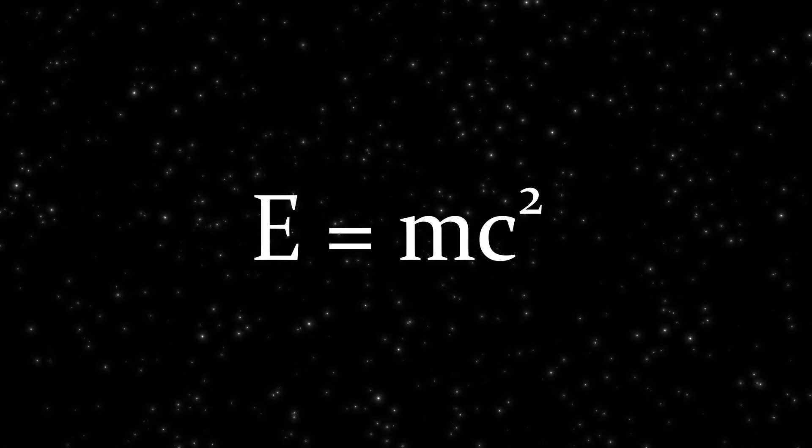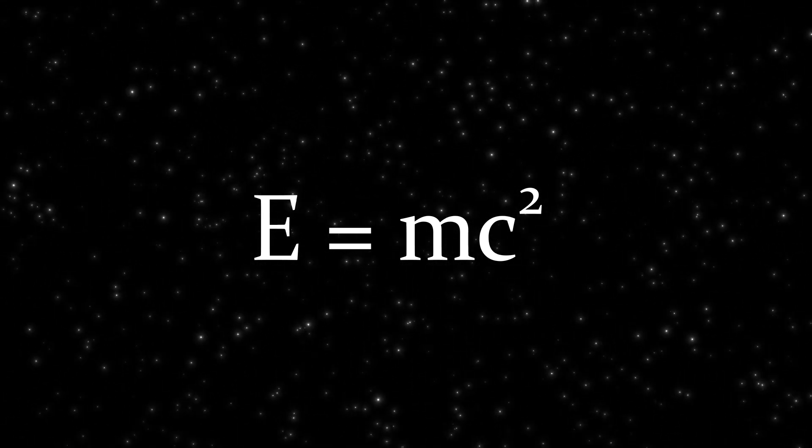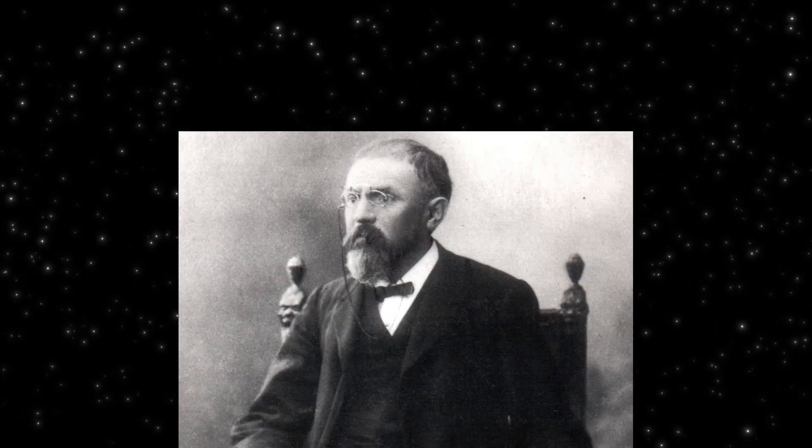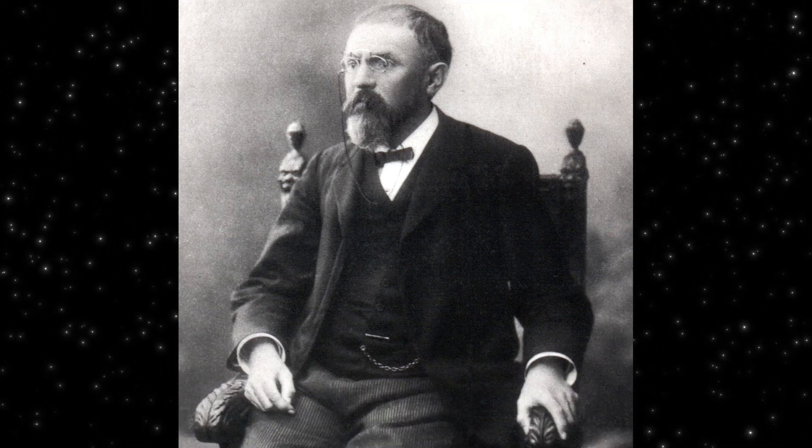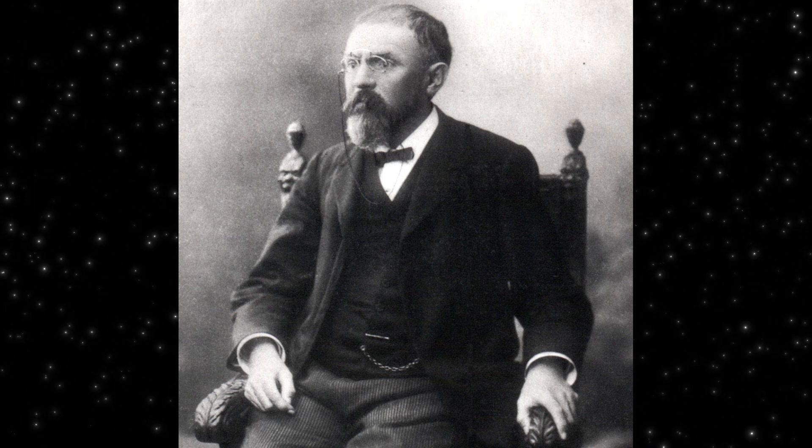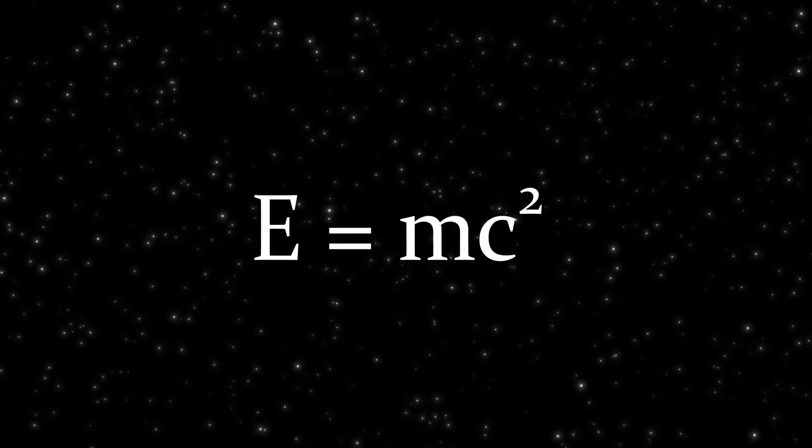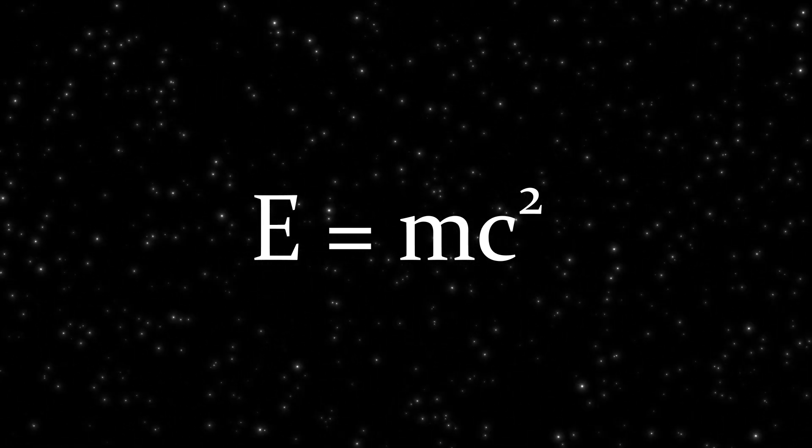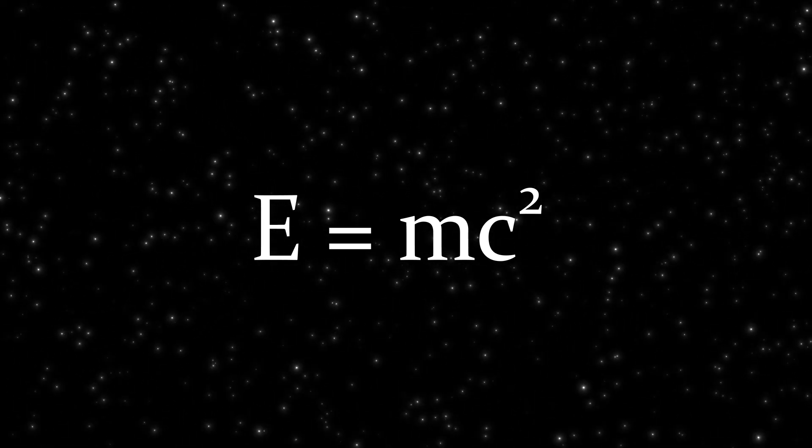In reality, you've been mistaken all this time. Let's start with the fact that this formula was not actually created by Einstein, but by Henri Poincaré, and this happened five years before the theory of relativity, back in 1900. But that's only part of the problem. The bigger issue is that the physical meaning of this formula is often misunderstood, or rather, not entirely correctly understood.